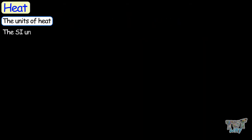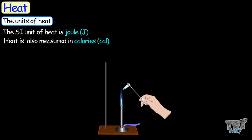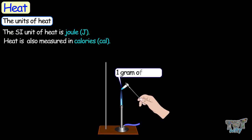Now let's learn the units of heat. The SI unit of heat is Joule. Heat is frequently also measured in the calorie, which is defined as the amount of heat required to raise the temperature of one gram of water from 14.5 degrees Celsius to 15.5 degrees Celsius.